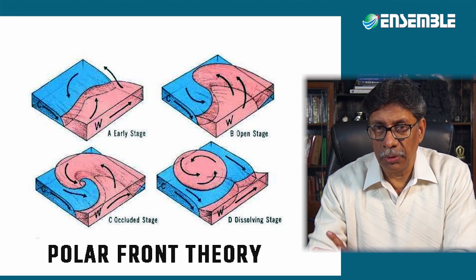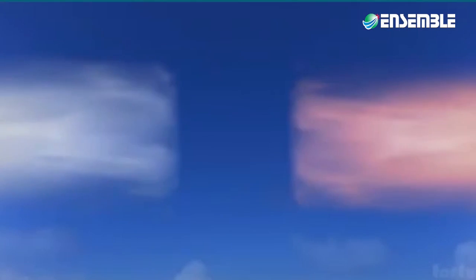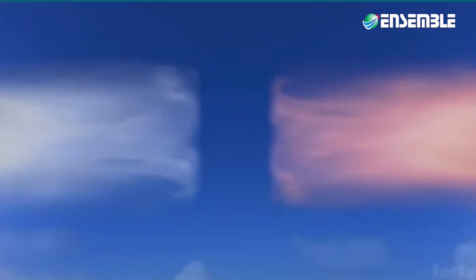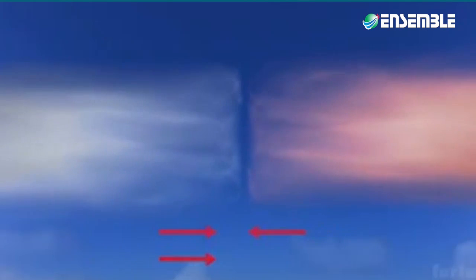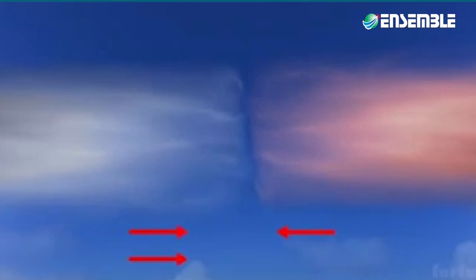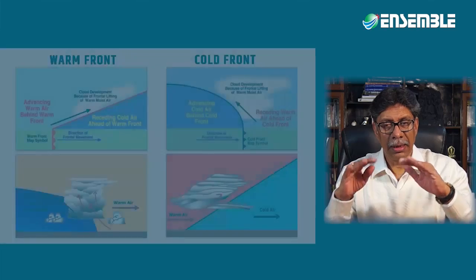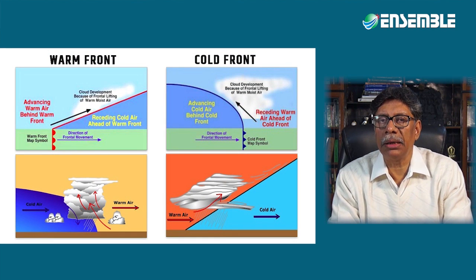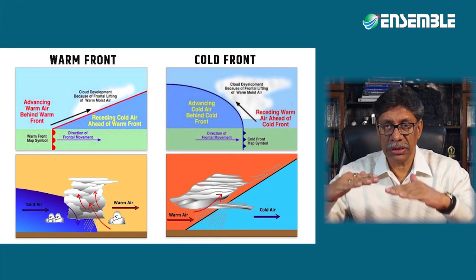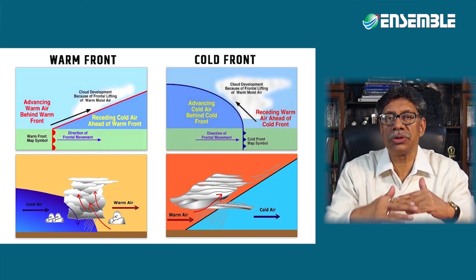According to the polar front theory, cyclones or depressions form where a wave develops on the polar front. Temperate cyclones form where tropical and polar air masses meet and converge. The tropical air mass is hot while the polar air mass is cold. When warm and cold air masses blow parallel to each other, the boundary line separating them is called a front.